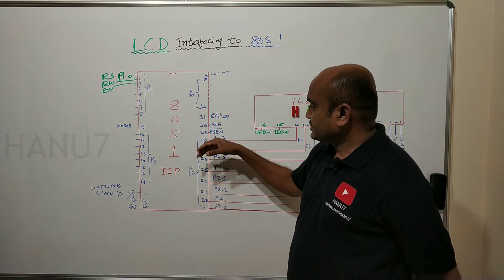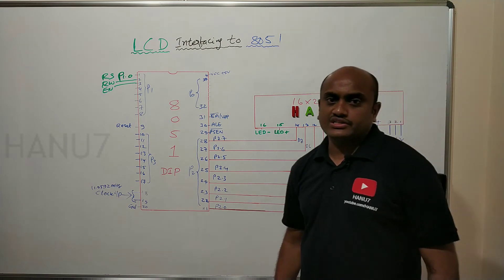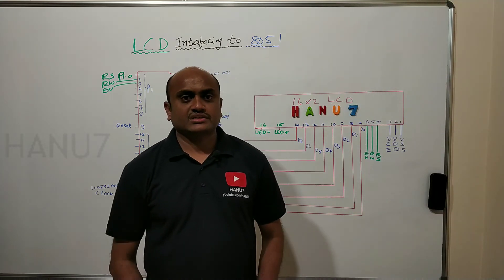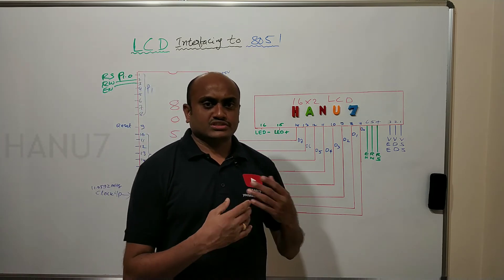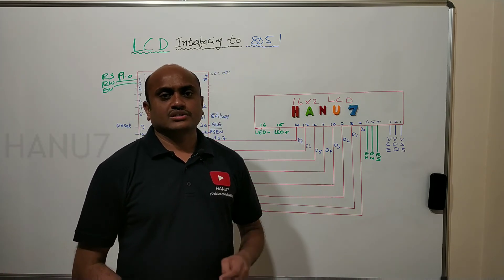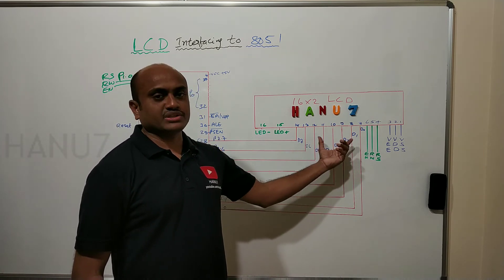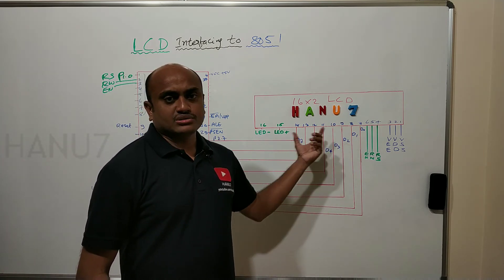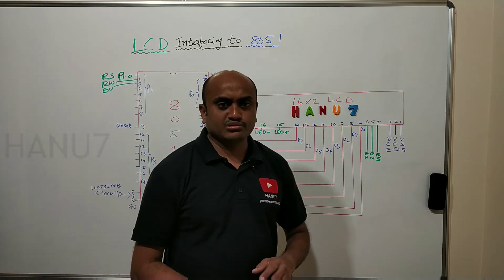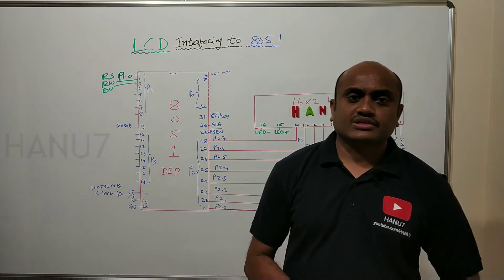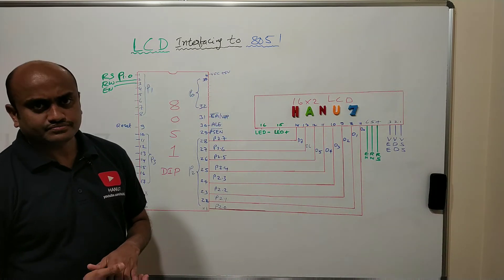Coming to the next set of pins: D0 to D7 — these eight data pins carry whatever data you want to send from the microcontroller to the LCD. These pins are connected to port 2 of the microcontroller. We can choose any port, but in this diagram I chose port 2.